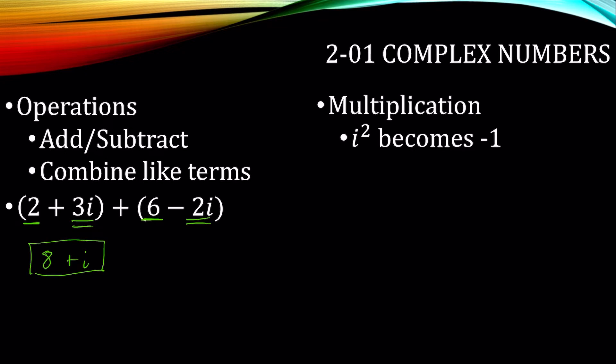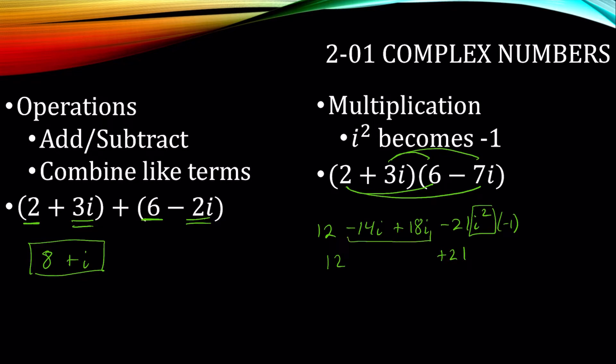We're going to multiply. You multiply just like you do with x's. Just when you get i squared, make it negative 1. Let's multiply these using the distributive property. 2 times 6, 2 times negative 7i, 3i times 6, 3i times negative 7i. That would be negative 21i squared. However, the i squared is negative 1, so that would become a plus 21 instead of a negative 21. We can combine those in the middle to make 4i. So now 12 and 21 would make 33 plus 4i.